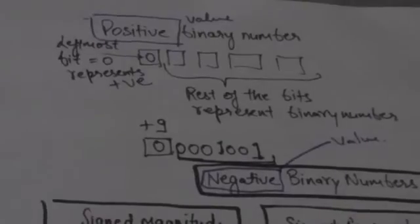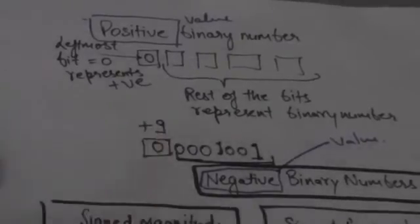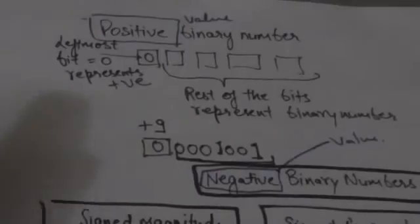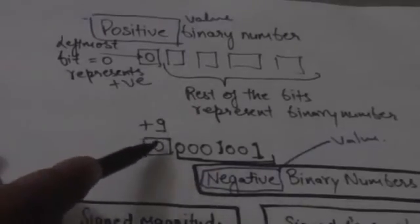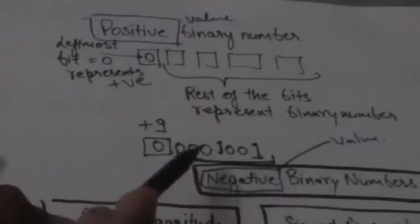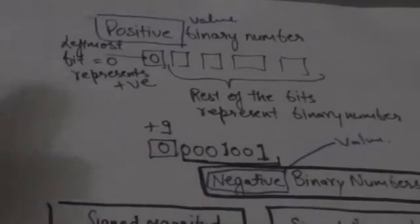Now, how can positive values be represented by signed binary numbers? The leftmost bit, which is the sign bit, is zero, which indicates that this signed binary number represents a positive value, and the rest of the bits represent the binary number. Suppose we have to write a signed binary number whose value is +9 — then the leftmost bit will be zero and the rest of the bits will be a binary number whose value is 9.